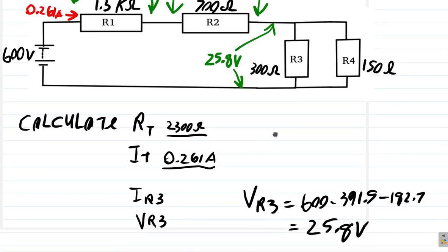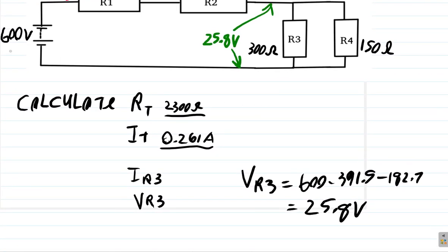Now, what's the current through R3? Well, we know the voltage drop and we know the resistance, so we can now find the current. Voltage drop across R3, V equals IR.